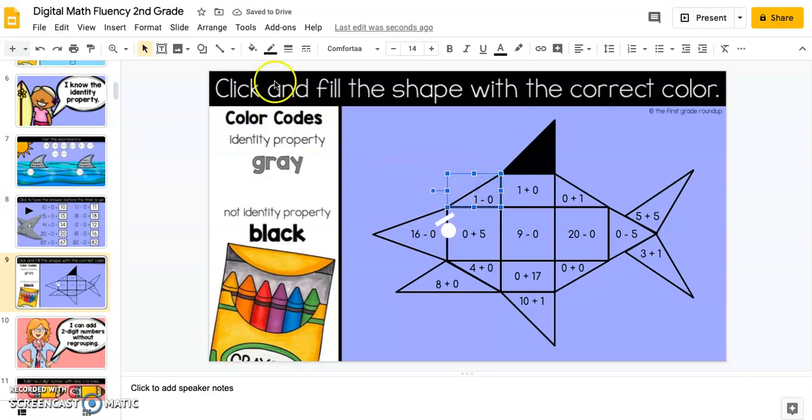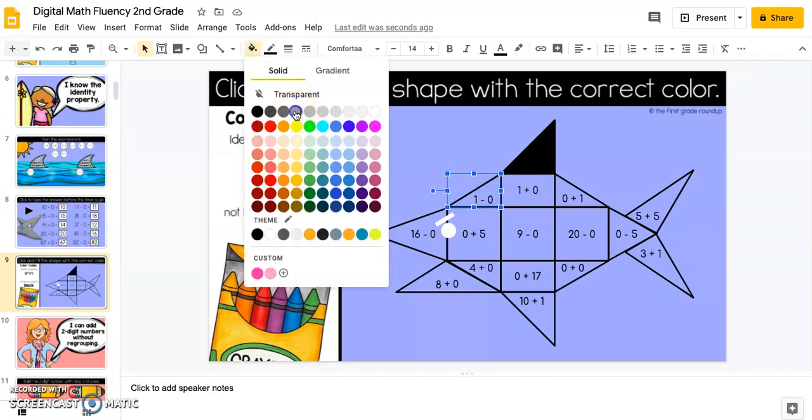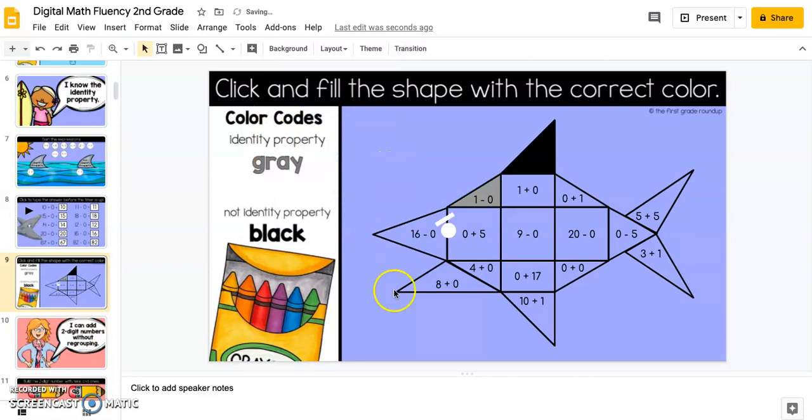This one is the identity property, so it's going to get colored gray. They'll go through and do all of those.